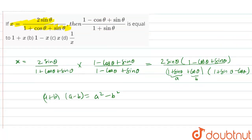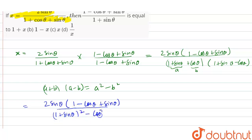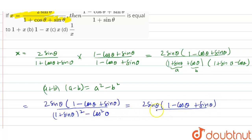So this is a plus b into a minus b, which is equal to a squared minus b squared. It will be 2 sin theta into 1 minus cos theta plus sin theta divided by a squared minus b squared. That is 1 plus sin theta squared minus cos squared theta.